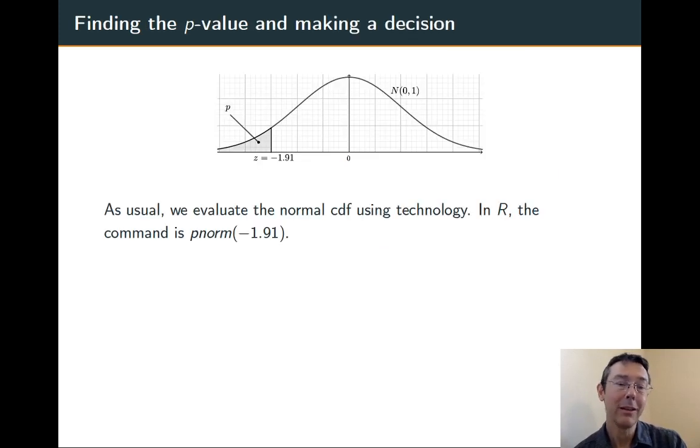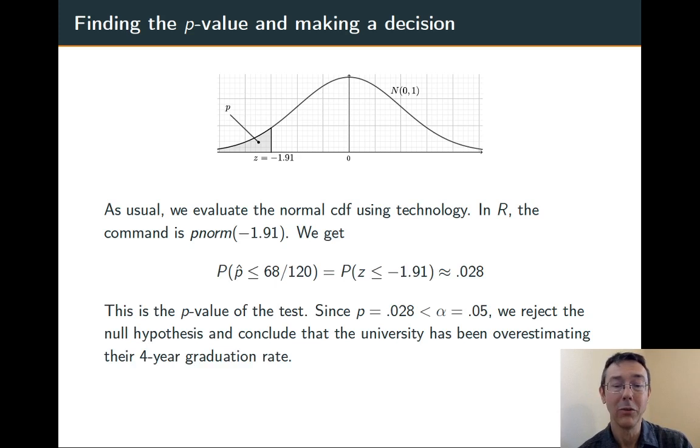To compute that probability, we need to do a normal CDF. We're going to look in a table, use a web app, use R. I use R, the command in R is pnorm, pnorm of negative 1.91, and I get 0.028.